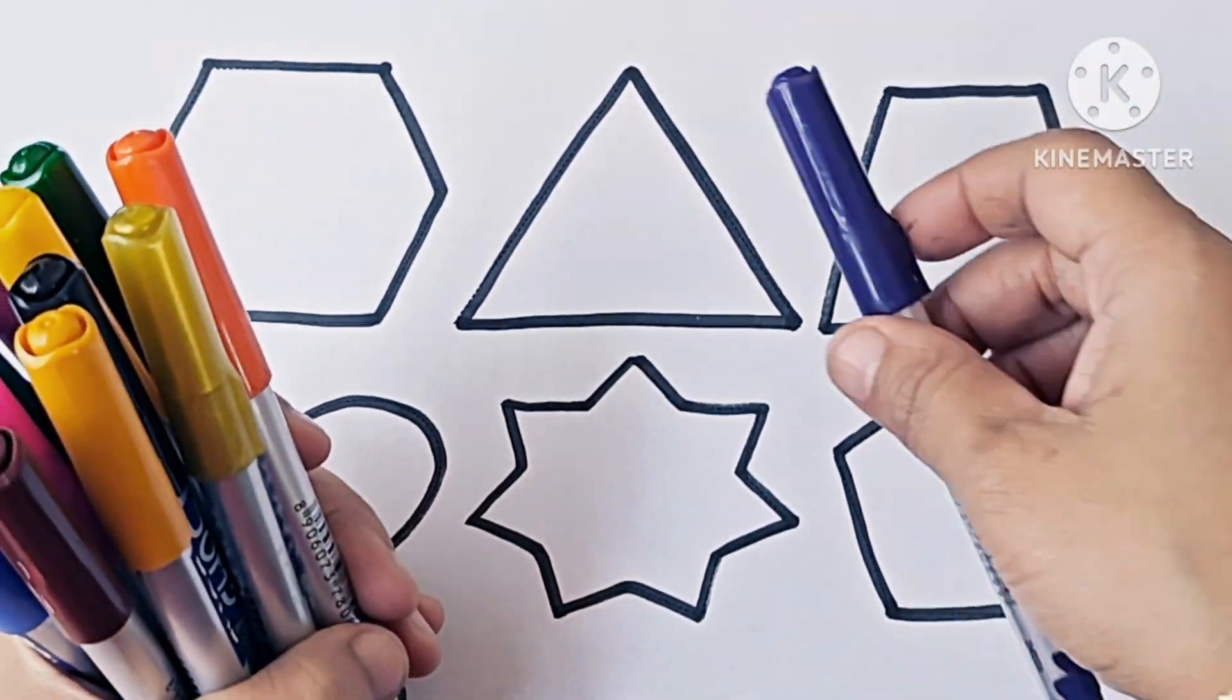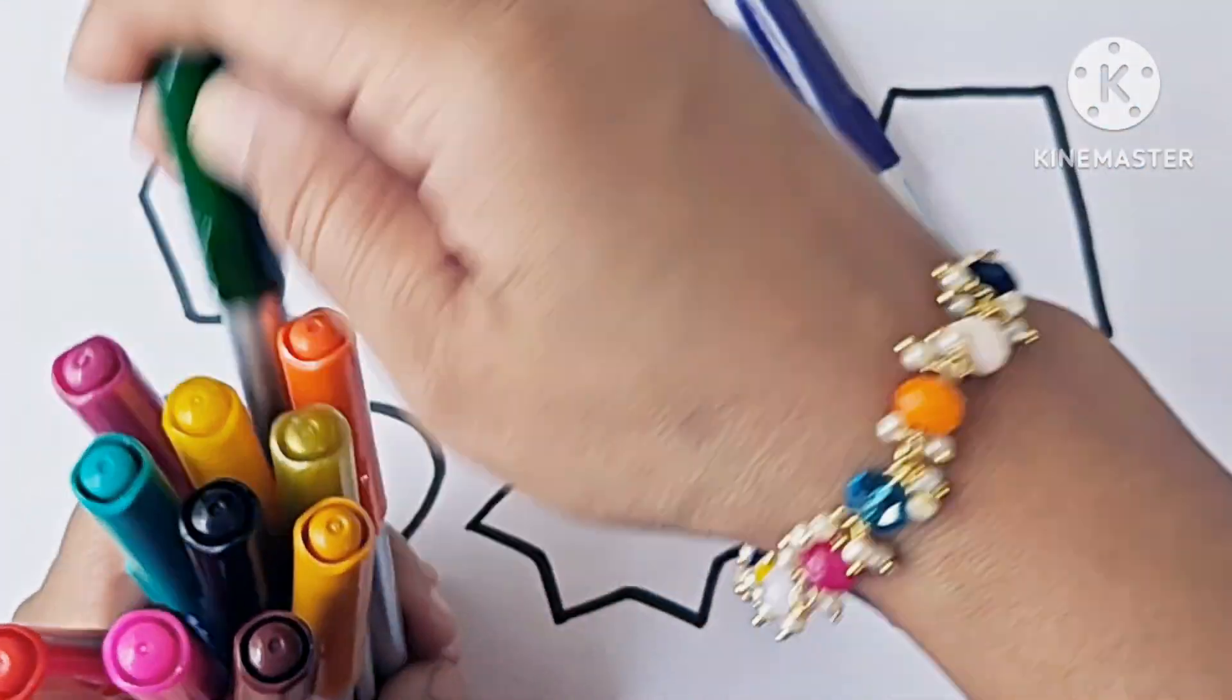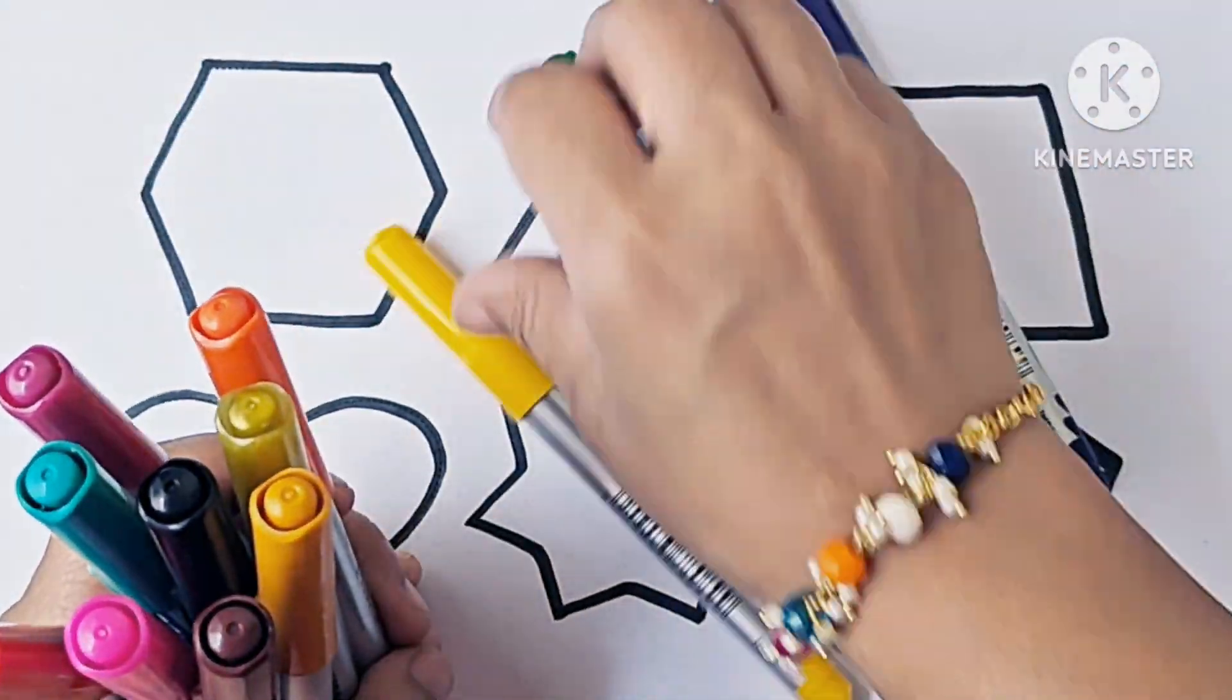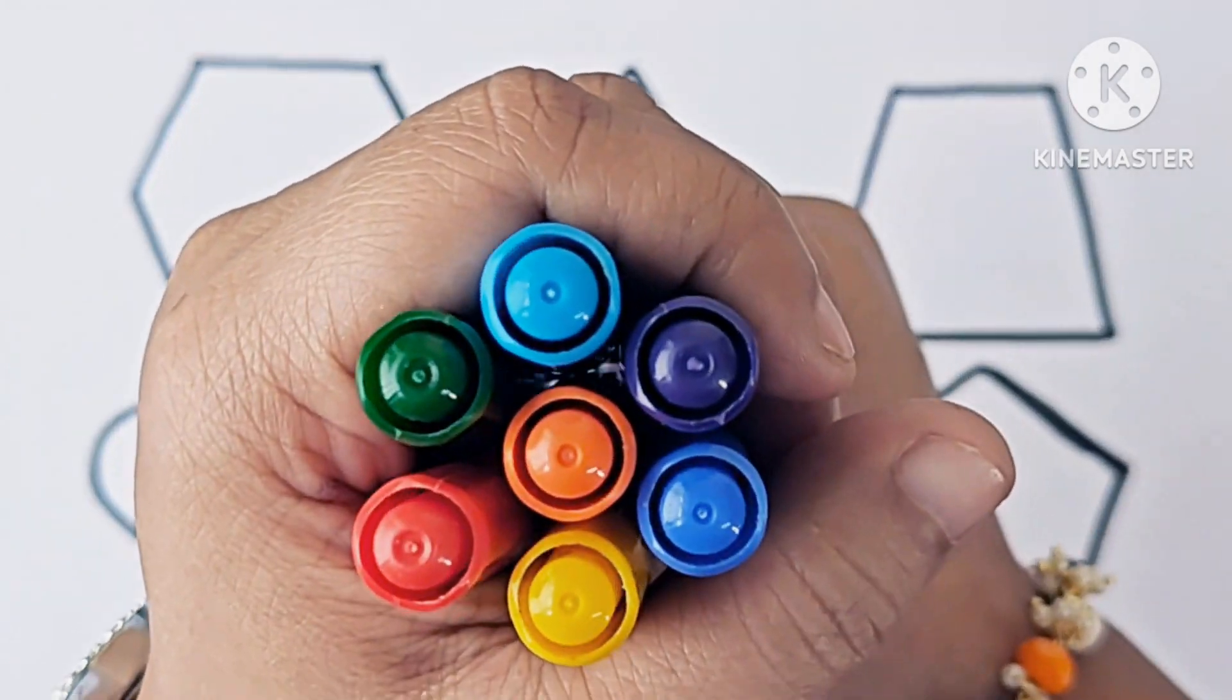This is violet color. Indigo. Blue color. Green. Yellow. Orange. Red. These are our rainbow colors.